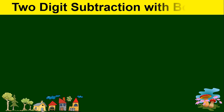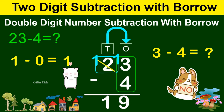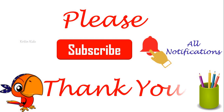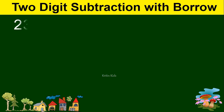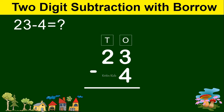Hello friends, let's learn two-digit subtraction with borrowing. Please subscribe to our channel and share it with your friends and family. Let's take an example: 23 minus 4. First, we will arrange these numbers properly in the form of tens and ones. So 3 comes under ones and 2 comes under tens. Likewise, 4 comes under ones.